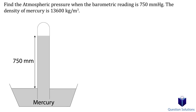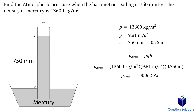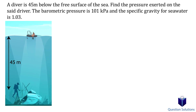In this question, we need to determine the atmospheric pressure when the barometric reading is 750 torr. Using the equation P = rho × g × h, we know the density of mercury, g is 9.81 m/s², and the height is 750 mm, which is 0.75 meters. Plugging in these values gives us the answer in pascals, which we can also express in kilopascals.